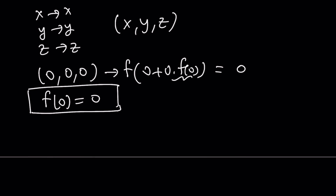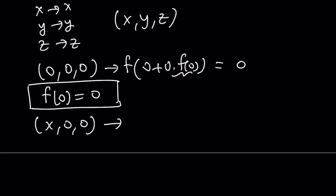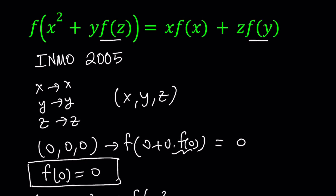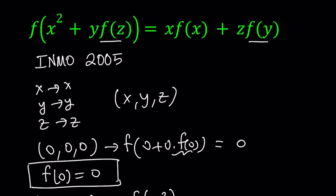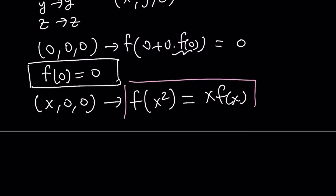Now let's use (x, 0, 0) — replace x with x, but the others as 0. Looking at the original equation, the terms involving y and z will disappear, and we end up with f of x squared equals x times f of x. This is important because it gives us something in terms of a single variable, which we can use later.